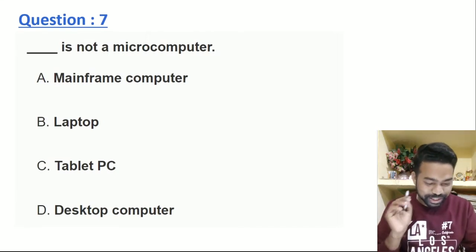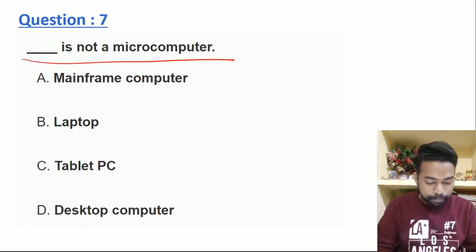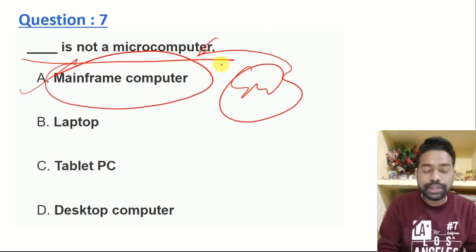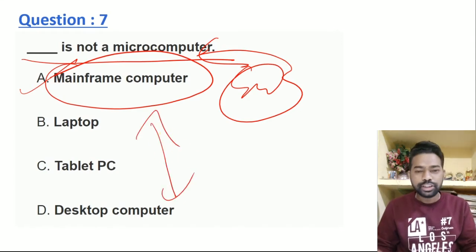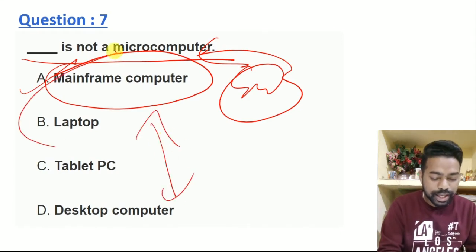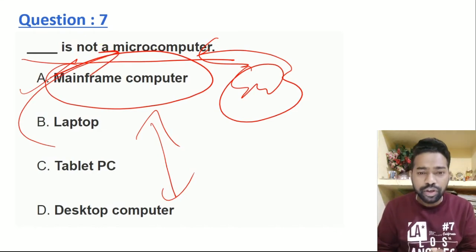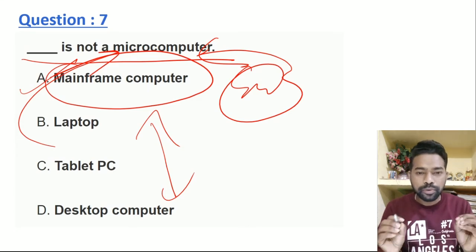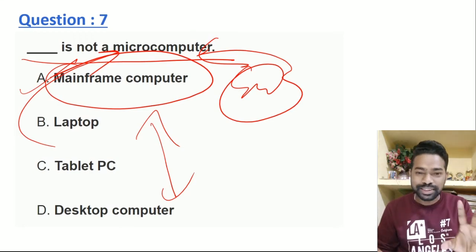The question is: which is not a micro computer? The mainframe is not a micro computer. We use the microcomputer as a supercomputer. The mainframe is like a microcomputer — but actually micro computers include laptop, tablet, desktop, PC. These come under the micro computer category. But your supercomputer — which one can go under micro computer? That is how the answer is.